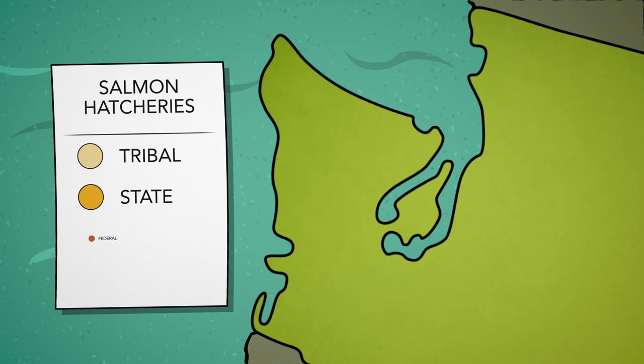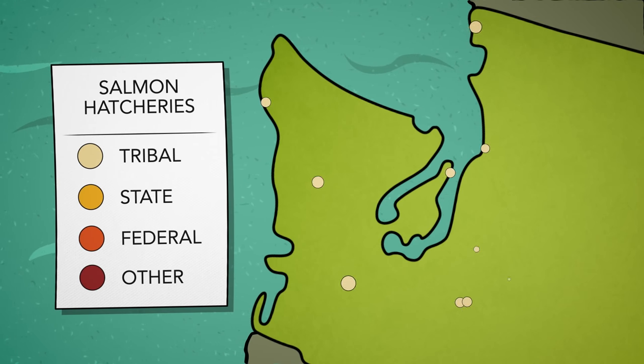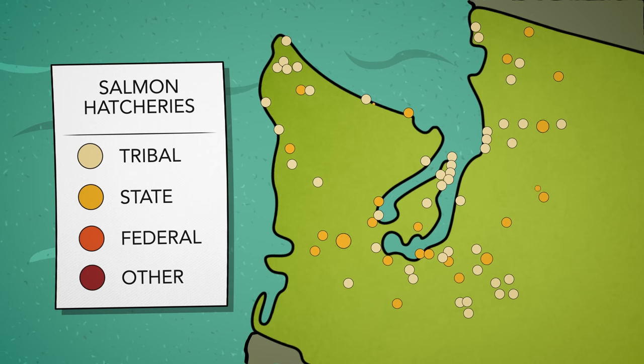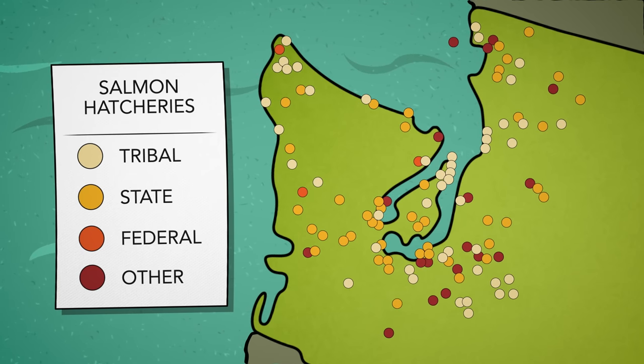Western Washington's network of tribal, state, and federal fish hatcheries make up one of the largest salmon hatchery systems in the world. In fact, most of the salmon harvested here are hatchery fish.